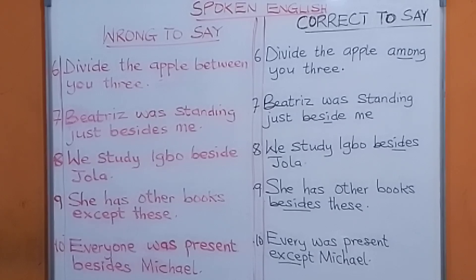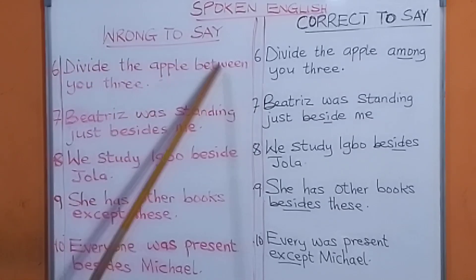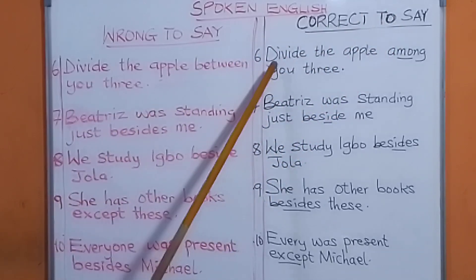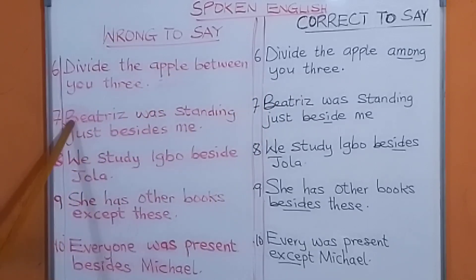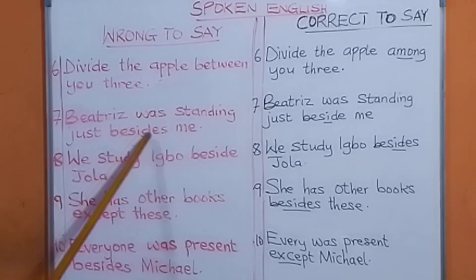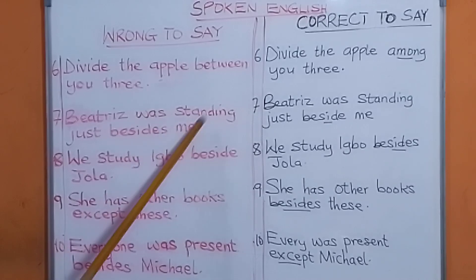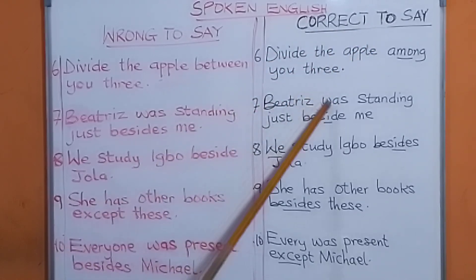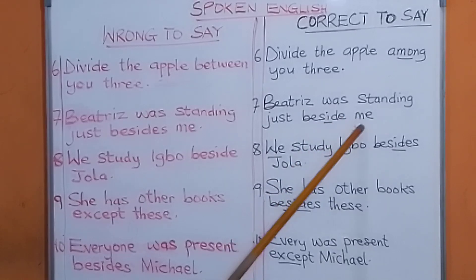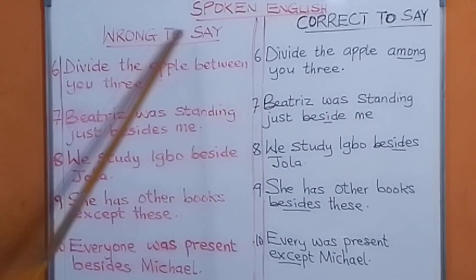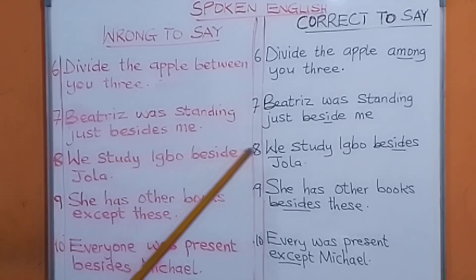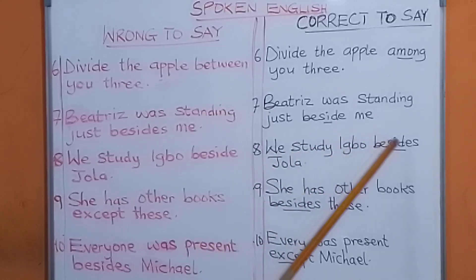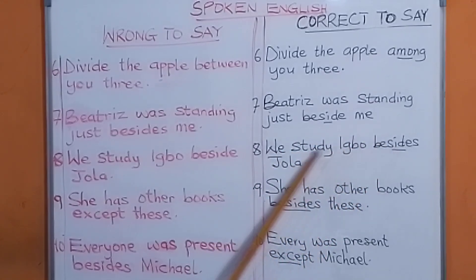Let's review: wrong to say 'divide the apple between you three' — the correct way is 'divide the apple among you three.' Wrong to say 'Beatrice was standing just besides me' — the correct way is 'Beatrice was standing just beside me.' Number eight: wrong to say 'we study evil beside Jola' — correct is 'we study evil besides Jola,' meaning in addition to Jola.